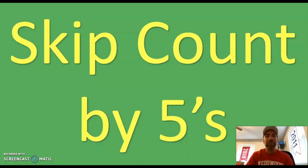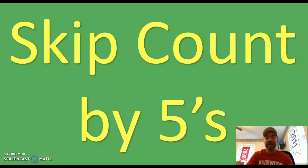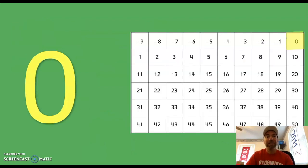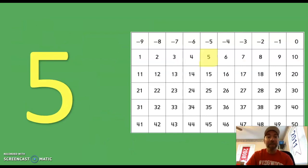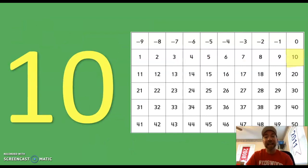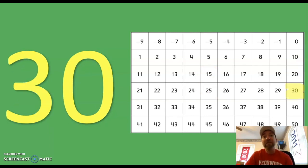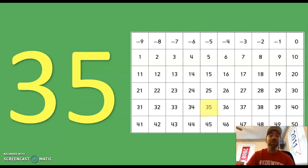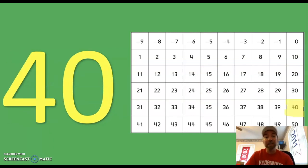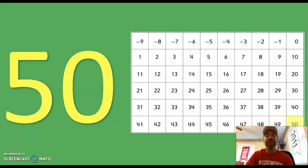And finally we're gonna practice skip counting by fives. We're gonna start at zero and we're gonna stop at 50. Here we go: 0, 5, 10, 15, 20, 25, 30, 35, 40, 45, 50. Awesome job!